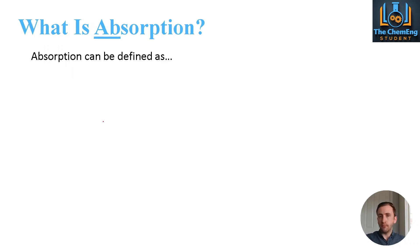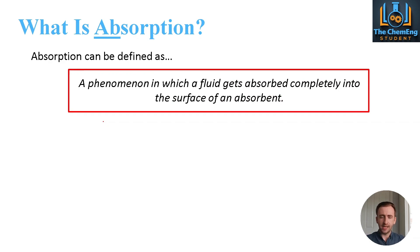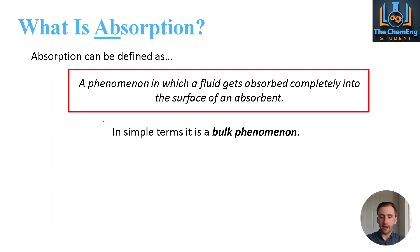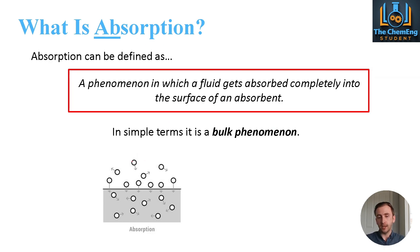If we look at absorption first, then if we were to define what absorption actually means, it's essentially a phenomenon in which a fluid gets absorbed completely into the surface of an absorbent. In a graphical sense, what we have is individual molecules that can bind themselves to the surface, but they can also enter the material itself. We can refer to this as a bulk phenomenon.